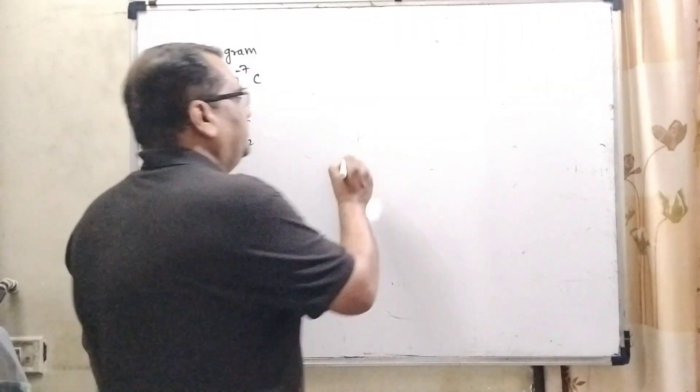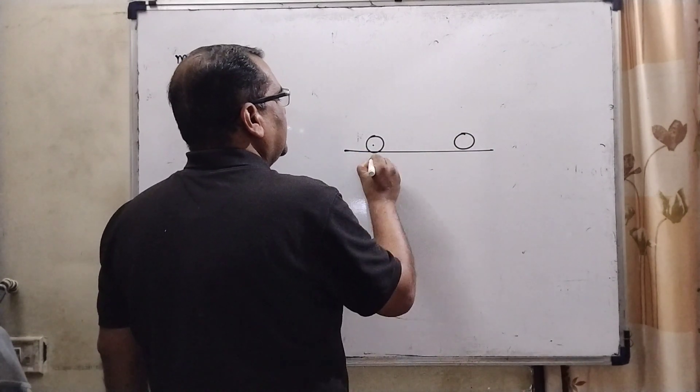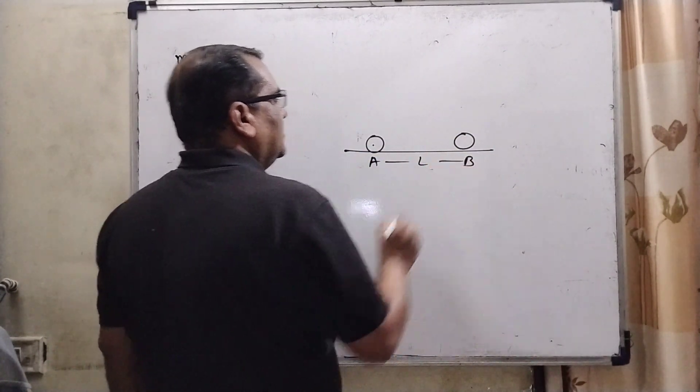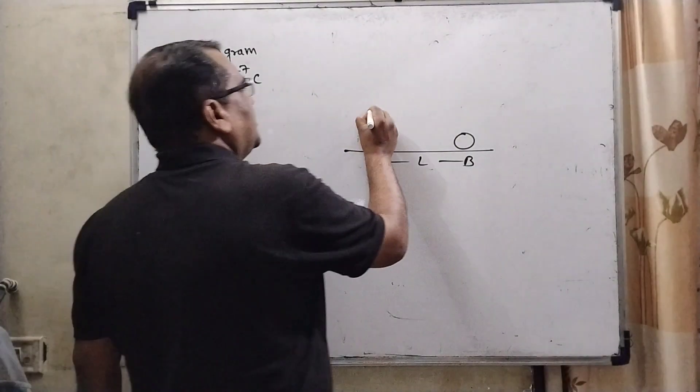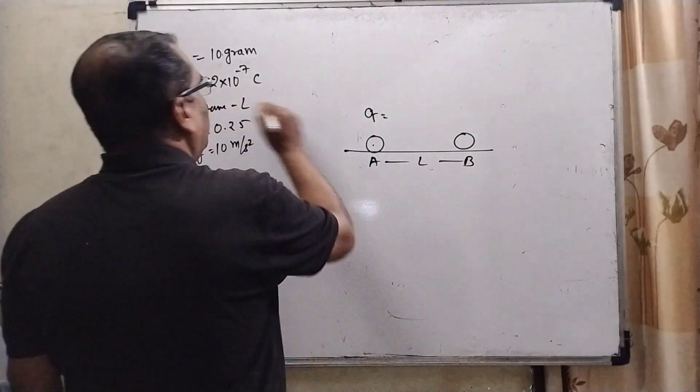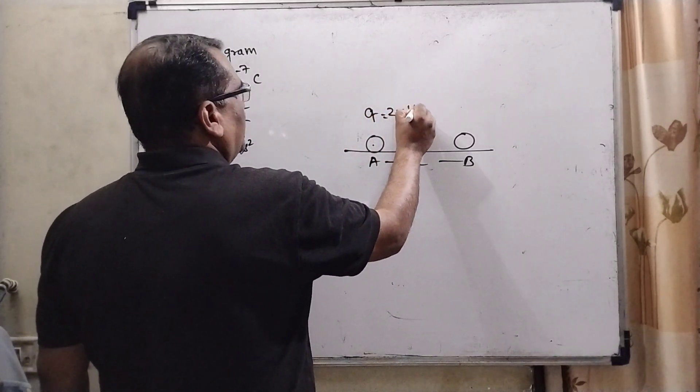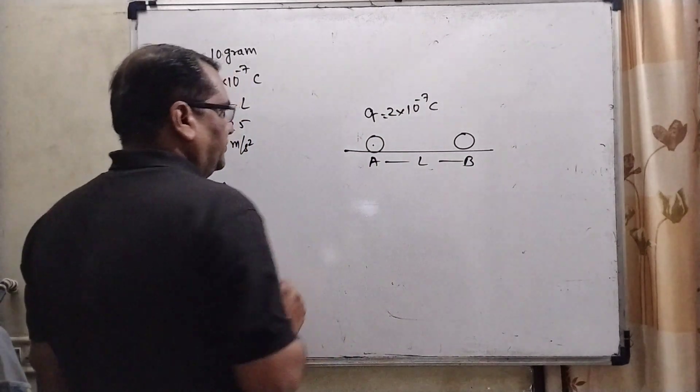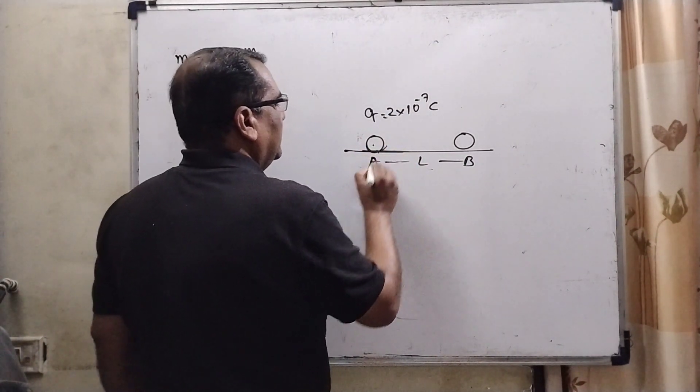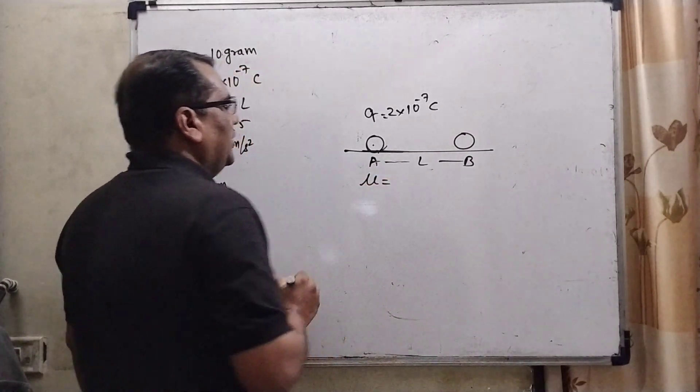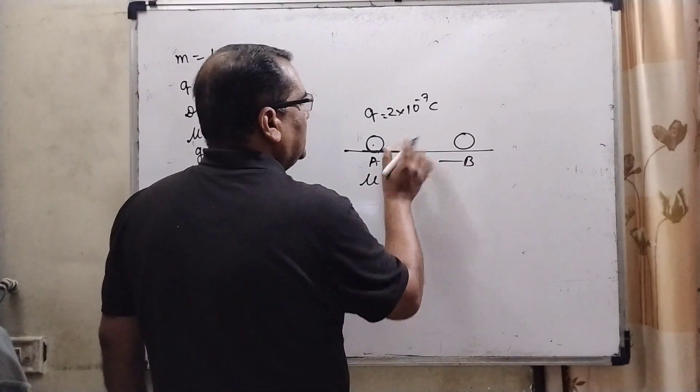Now in this question, we have given two charged particles. Let us say A and B. The distance between A and B is L. Given the charge Q = 2×10⁻⁷ Coulomb. Now the friction is applied between table and charge. The friction coefficient is given as 0.25.